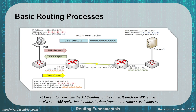First, PC1 needs to determine what the MAC address of the router is going to be. It sends an ARP request inside its internal network, receives an ARP reply, and then can forward its data frame using the local switching of the network to the router. When it's looking for 192.168.3.2, the router is going to respond back and say it's the gateway. It answers with an ARP reply, and PC1 sends the information to the router.